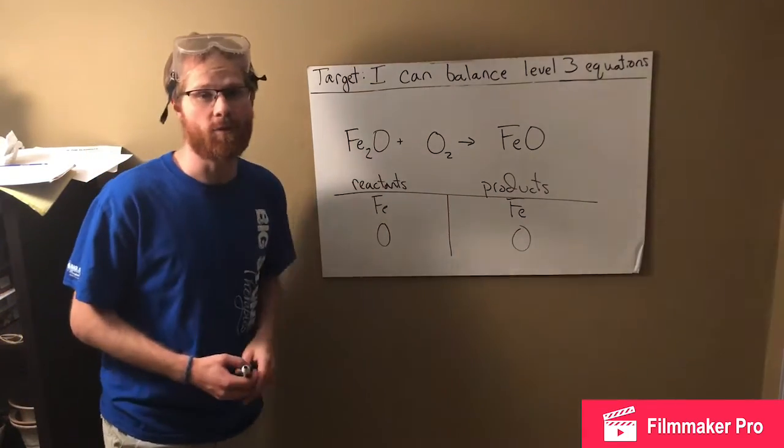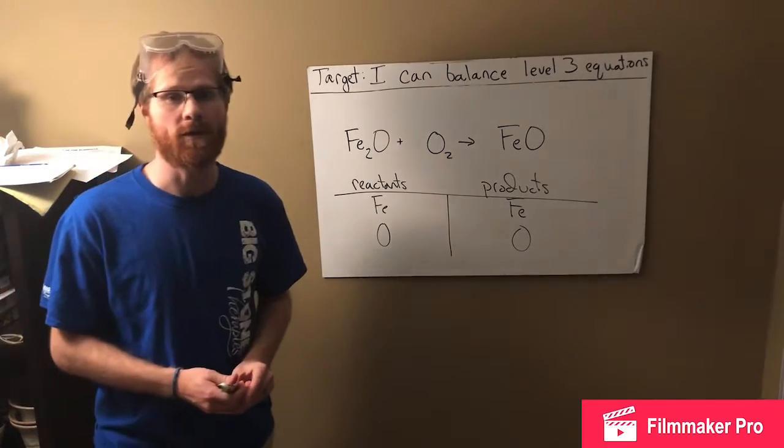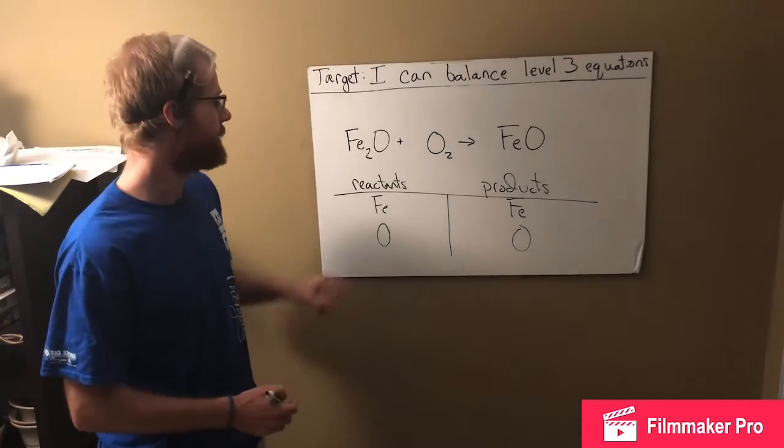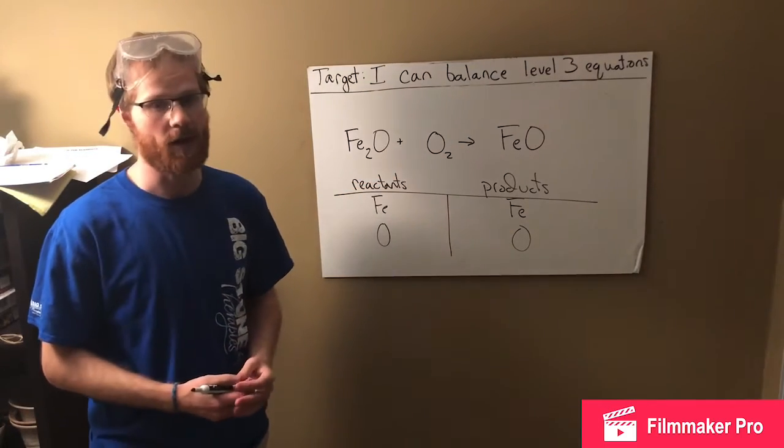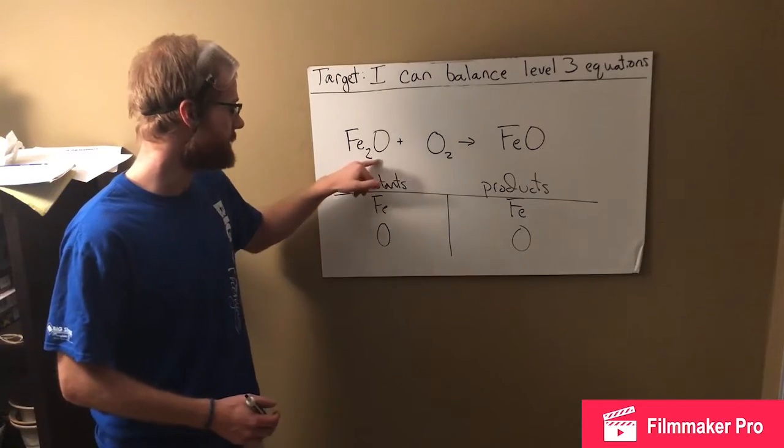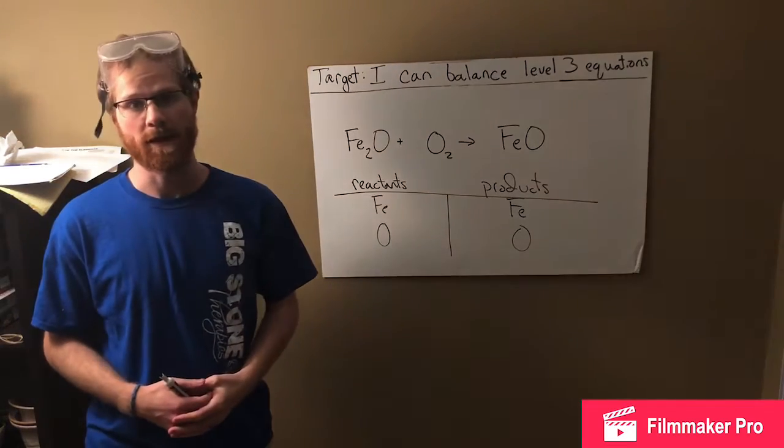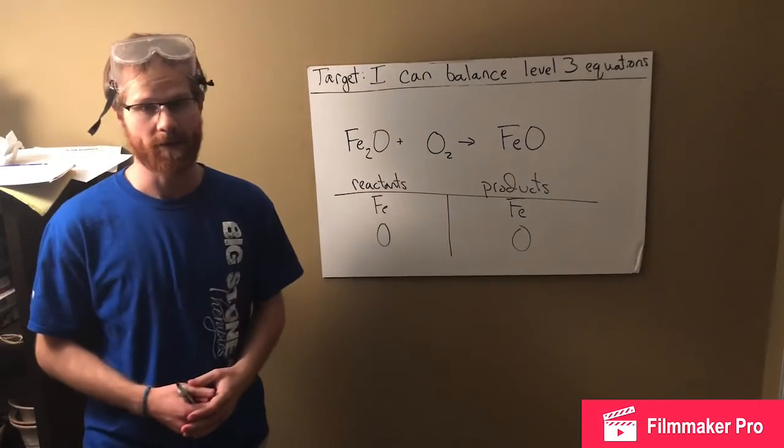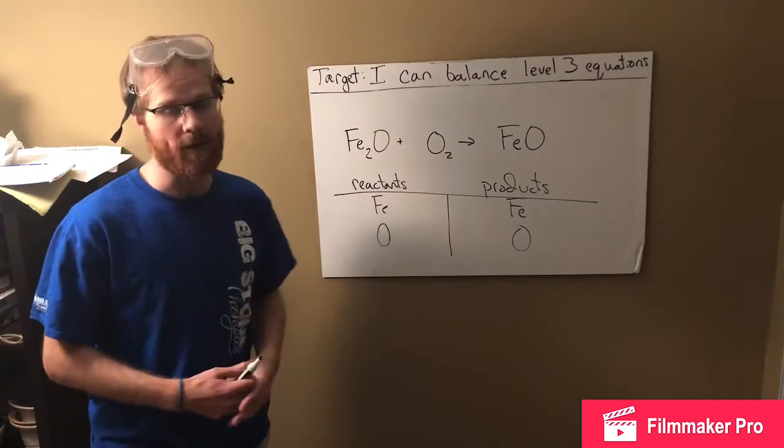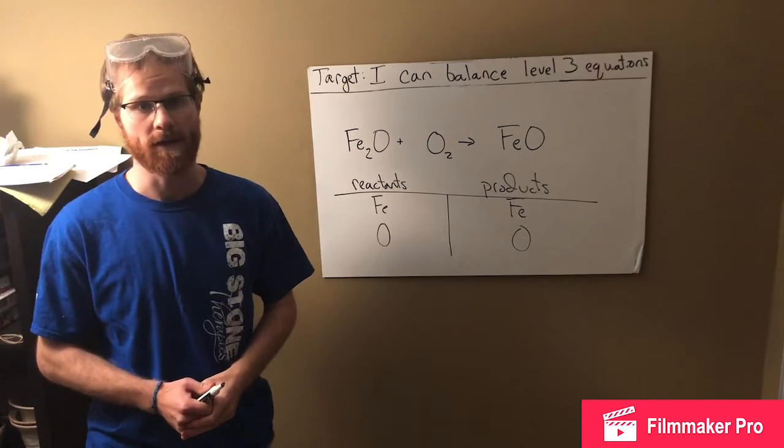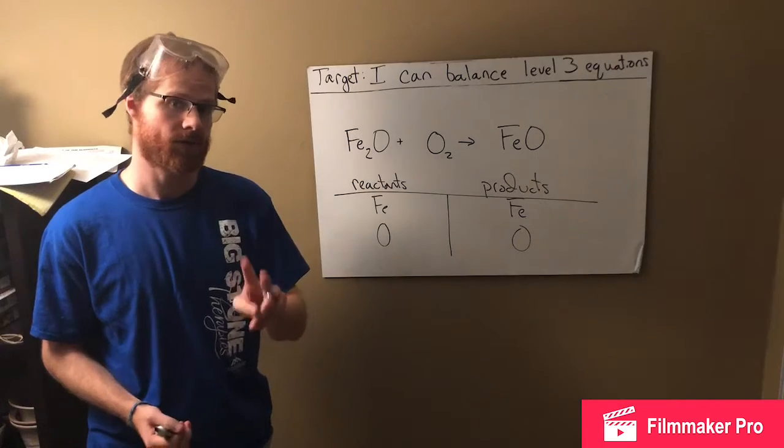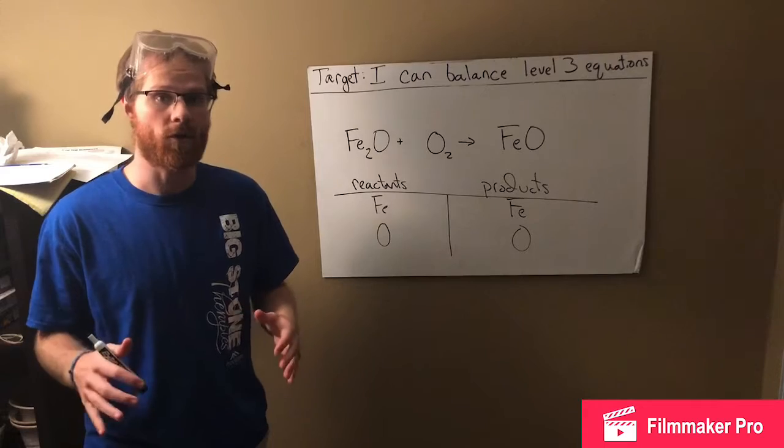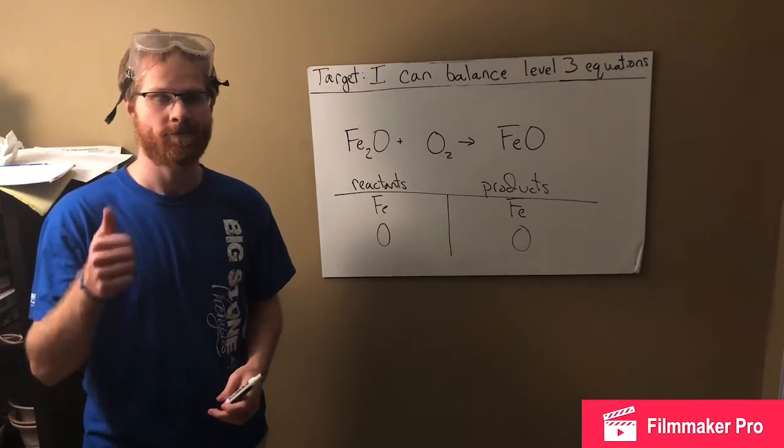This is a level two problem that is similar to a level two problem we went over yesterday. The reason it's a level two problem is because there is oxygen in two places on the reactant side. And so when you're balancing the oxygen, you need to remember to take into account the fact that there is oxygen in two places on our reactant side. Go ahead, take a moment, write down the unbalanced chemical equation as well as the element bank, and see if you can balance this level two equation. See if you can effectively hit yesterday's target. If you can't, don't worry. We'll go over it once you've tried. Good luck.